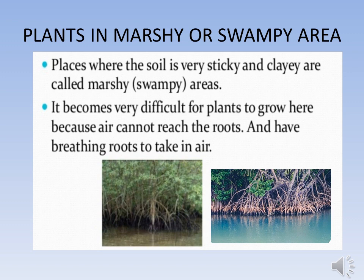The next category of terrestrial plant is plants in marshy or swampy areas. Places where the soil is very sticky and clayey are called marshy or swampy areas. It becomes very difficult for plants to grow here because air cannot reach the roots. Hence, plants that grow here — for example, mangrove — develop and give out roots that help them to breathe, called breathing roots.